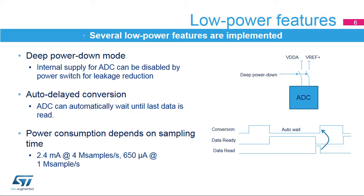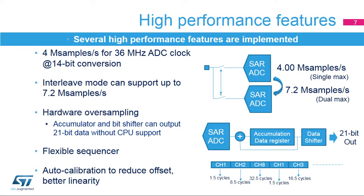The power consumption is a function of the sampling frequency. For low sampling rates, the current consumption is reduced almost proportionally. The ADC supports up to 4 megasamples per second of 14-bit conversion. By using dual-interleaved mode, it can be extended to 7.2 megasamples per second.